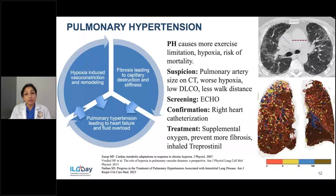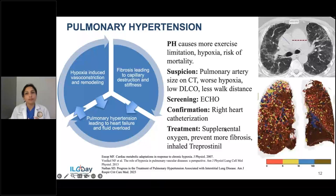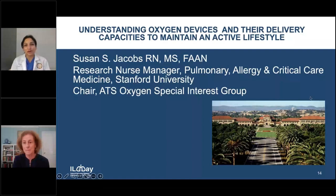We want to prevent this complication. The most important way is by ensuring you get good enough oxygen so your lungs aren't going through that process. The second most important thing is to try to control the fibrosis itself, since fibrosis causes the low oxygen and destruction of blood vessels. There is also a new therapy called inhaled treprostinil that was recently approved for pulmonary hypertension and was shown to improve exercise capacity. I'll now hand this over to Susan Jacobs, who will talk about oxygen devices and oxygen delivery.